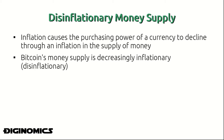For an example of this: throughout the 20th century, in the early 20th century, a US dollar was able to purchase roughly 90 percent more goods and services than it does today. This is because the US dollar is relatively an inflationary currency and over time it loses its purchasing power.